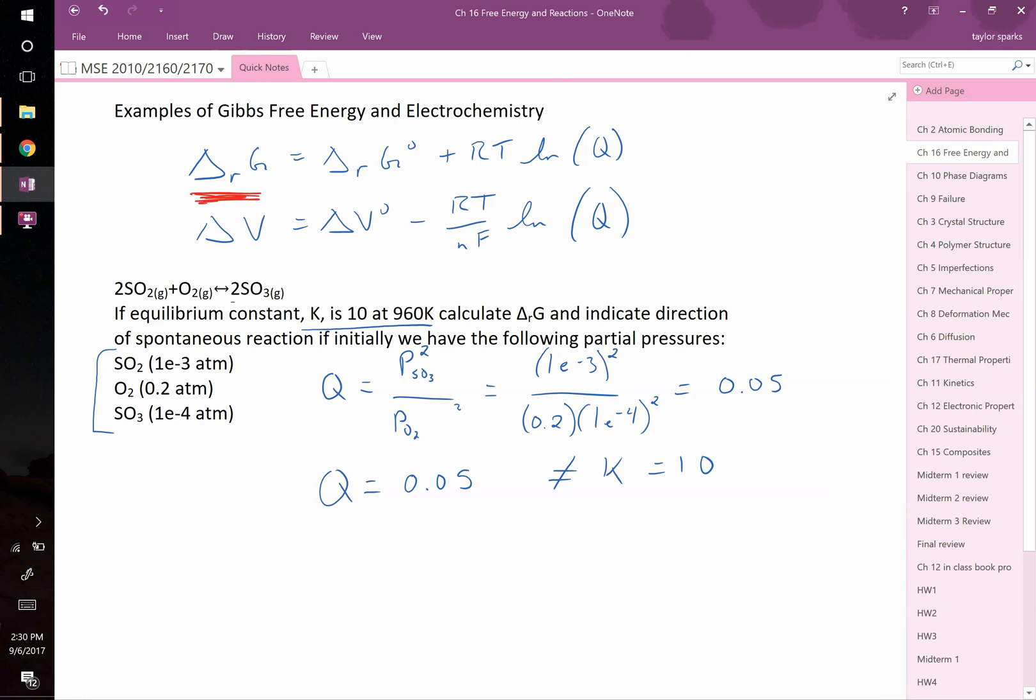In order to solve for delta RG, we need to know delta RG0. We don't know that yet. R and temperature we know, and Q we just solved for. So as soon as we figure out what delta RG0 is, we can go ahead and solve this question. How though do we figure out what delta RG0 is?